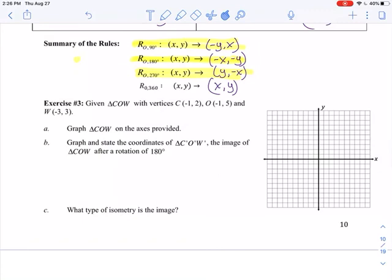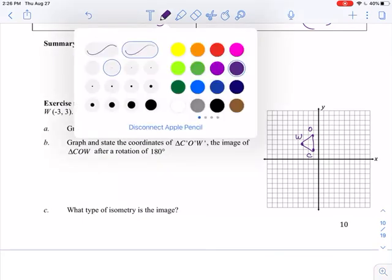So let's look at example 3. Given triangle COW with vertices C is (-1, 2), O is (-1, 5), and W is (-3, 3). Graph triangle COW on the axis provided. So I've got to go to (-1, 2). And then I have (-1, 5). This is going to be a little small. It's going to be on top of each other. And then I have (-3, 3). So I have COW.